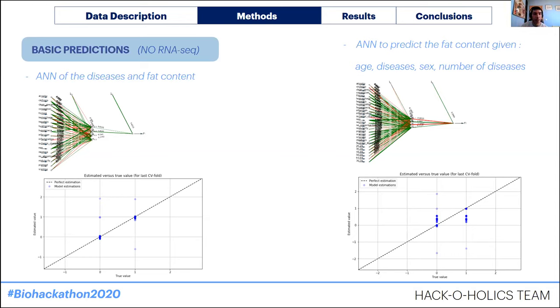Depending on the liver or pancreas — I think this was the liver — it ended up getting okay results for clustering.